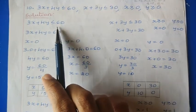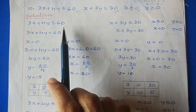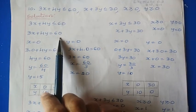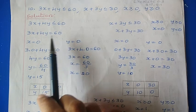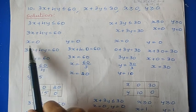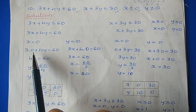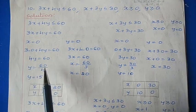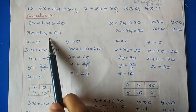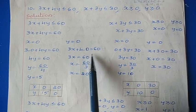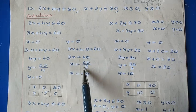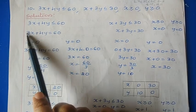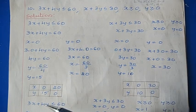First we have 3x plus 4y less than or equal to 60. Convert the given inequality into an equality statement: 3x plus 4y is equal to 60. To find the solution, take x equal to 0: we get 4y equal to 60, so y equal to 15. Next put y equal to 0: we get 3x equal to 60, so x equal to 20. So for this equality statement we have got two solutions: (0, 15) and (20, 0).